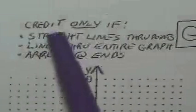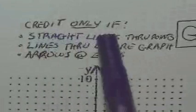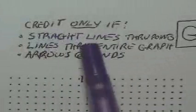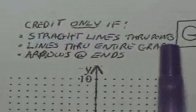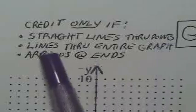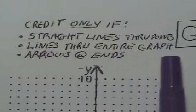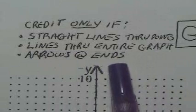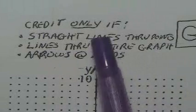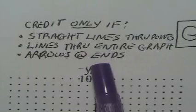Let's look at the directions to the left. It says credit only if you have to do these things: straight lines through points, lines go through the entire graph, and there are arrows at the ends. So when you graph, you need to do those three things or else you will not receive credit.